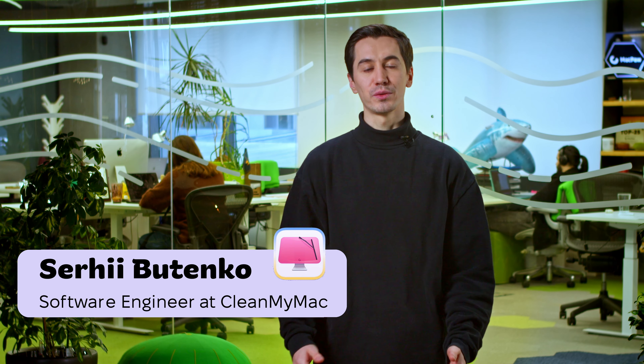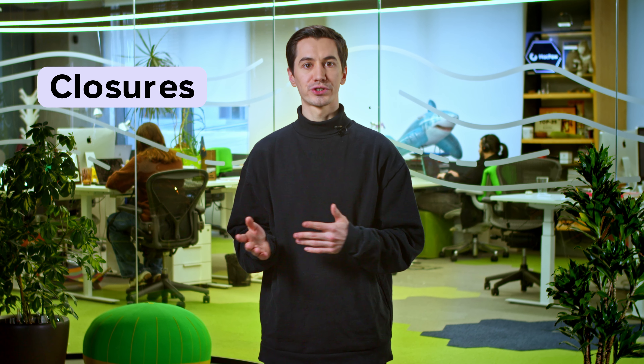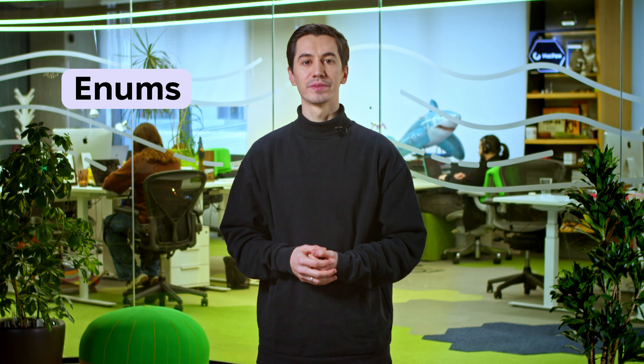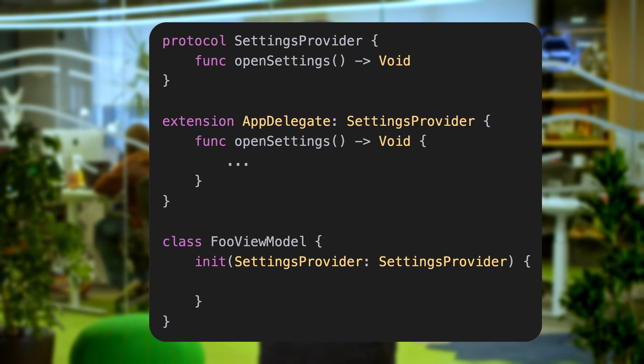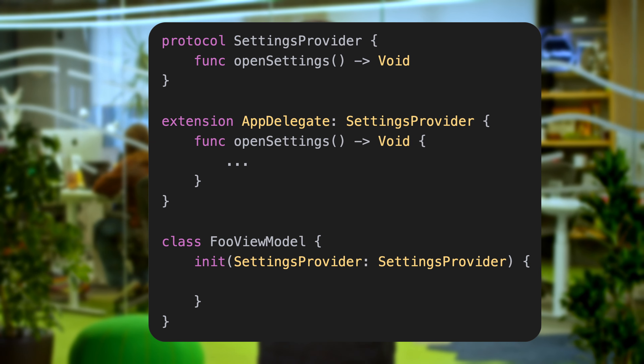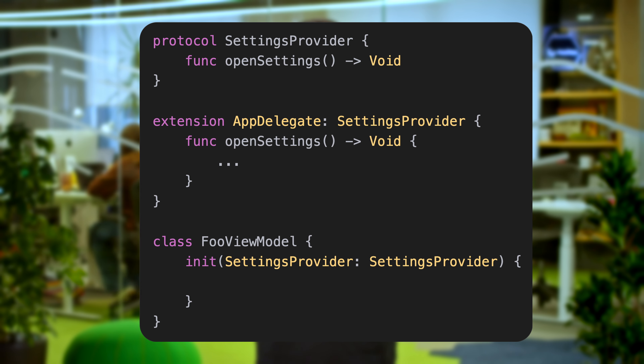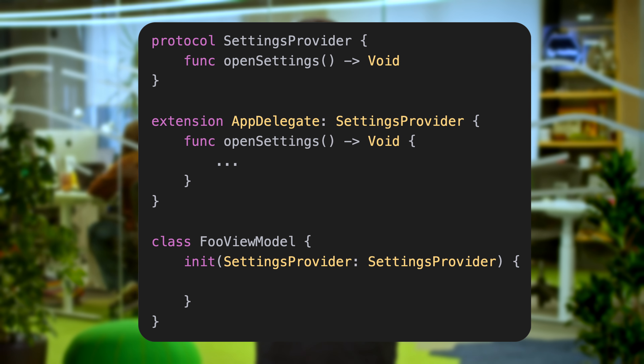You don't need protocols. In many cases, you can use closures, structures, or enums instead. Consider this: if you need to pass a single call and you go for a protocol, you will have to give it a name, add a function, pass the dependency, and conform the protocol. Then create a mock for testing and conform the protocol as well. Way too much code and complexity. Just pass a closure as an argument and you will be good to go.